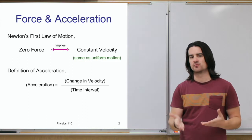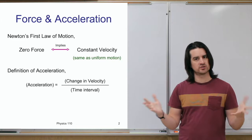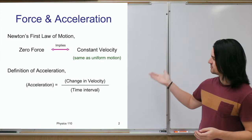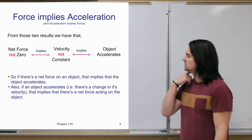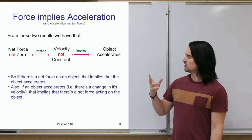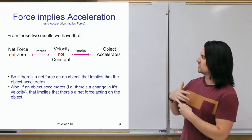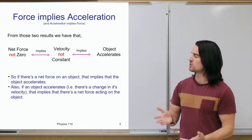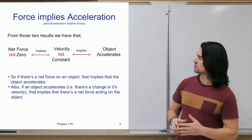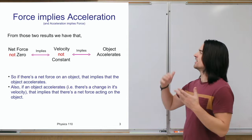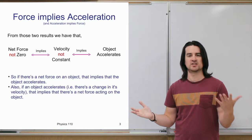Even zero velocity — being at rest — is still considered uniform motion, because it's not changing. We also looked at the definition of acceleration: how much an object changes its velocity over time. So if the net force equals zero, the velocity doesn't change. However, the inverse of that is: if the net force is not zero, Newton's first law implies the velocity would not be constant, meaning that object is accelerating.